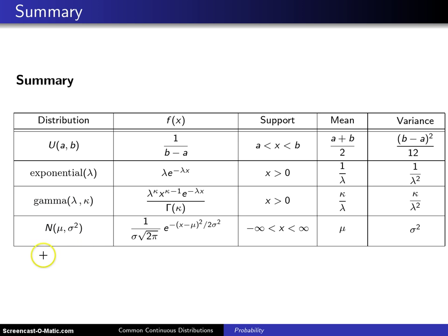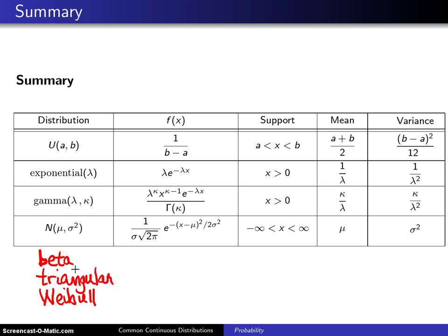Among the other distributions covered, we have the beta distribution, the triangular distribution, and the Weibull distribution. Beta is for random variables that can assume values between zero and one. The triangular distribution is useful when there is no data and you need to use expert opinion. The Weibull is another survival distribution, like the exponential and the gamma, because it has positive support.